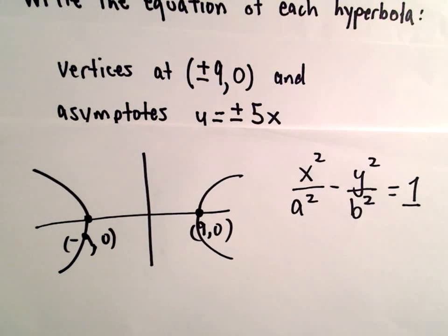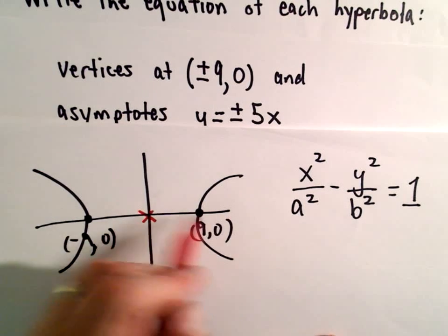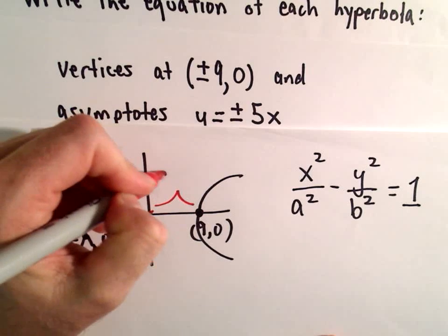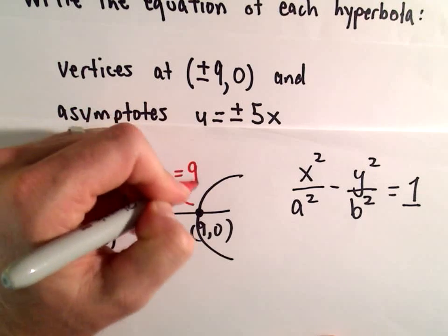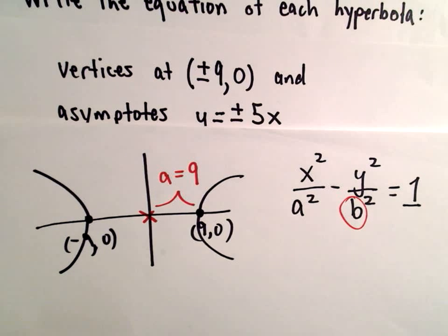Again, a is the distance from wherever it's centered, again in this case the origin, to one of the vertices. So in this case, I know that a is going to equal positive 9. So again, the only thing we're really missing is this value for b.